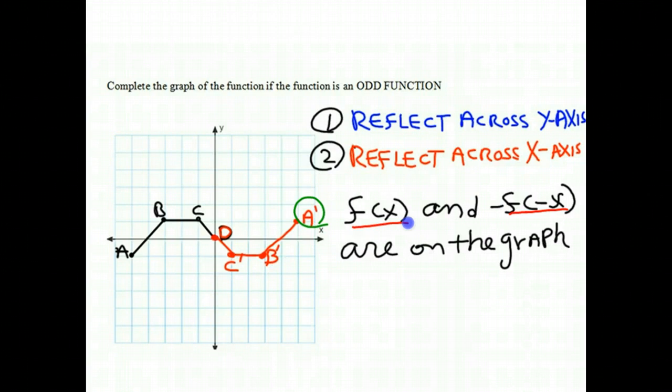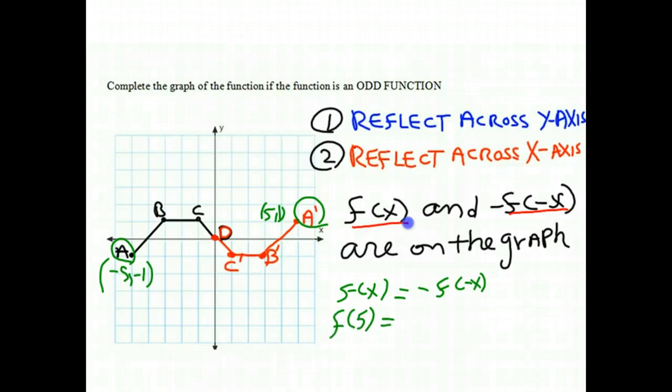So let's just pick our point A prime, which is here. Notice that this point is at 5, 1, and its reflected point across the origin would be here, which is at negative 5, negative 1. So let's see if what we said is true in our definition. According to our definition, f of x must be equal to negative f of negative x. Well, f of x in our case is f of 5, so we'll say f of 5. And is it true that f of 5 is equal to negative f of negative 5?